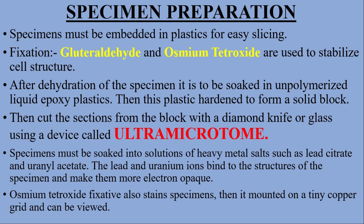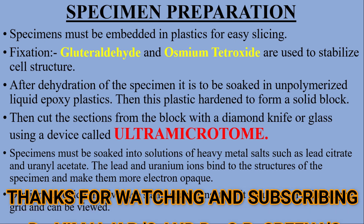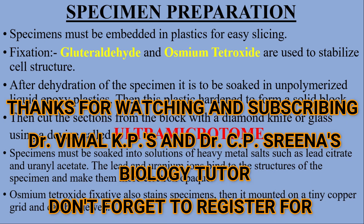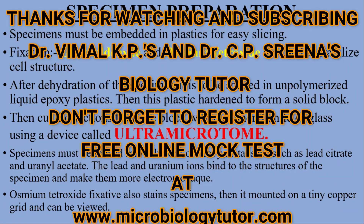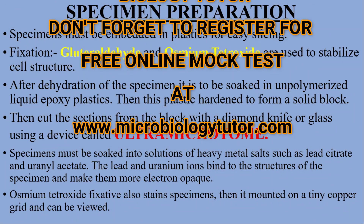Specimens must be soaked in solutions of heavy metal salts such as uranyl acetate and lead citrate. The lead and uranium ions bind to the structures of the specimen and make them more electron opaque. Osmium tetroxide fixative also stains specimens. Then the specimen is mounted on a tiny copper grid and can be viewed.